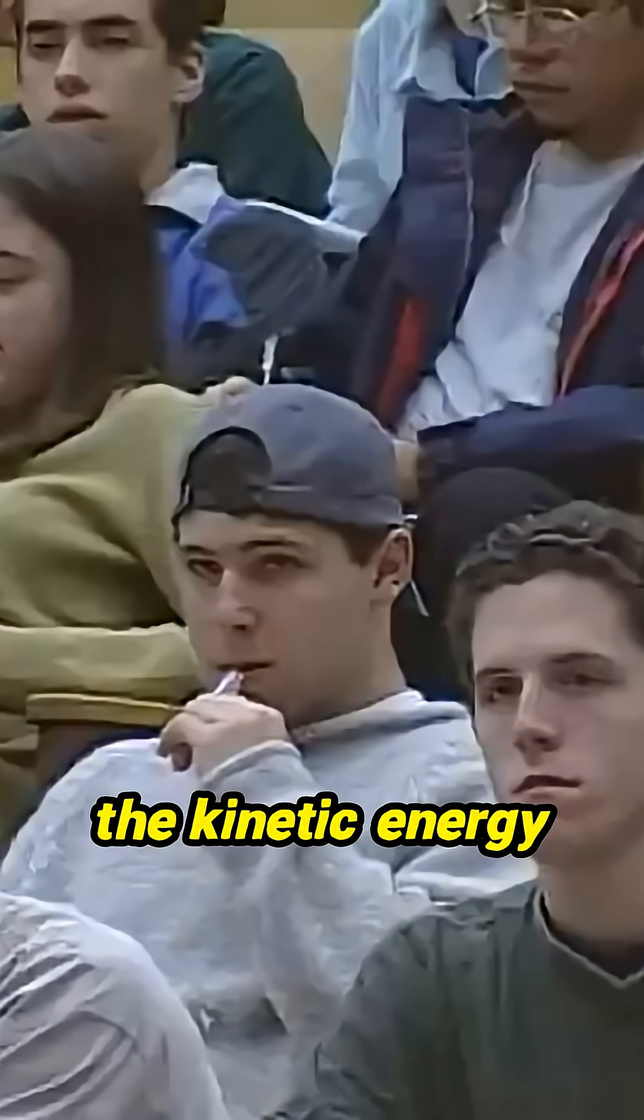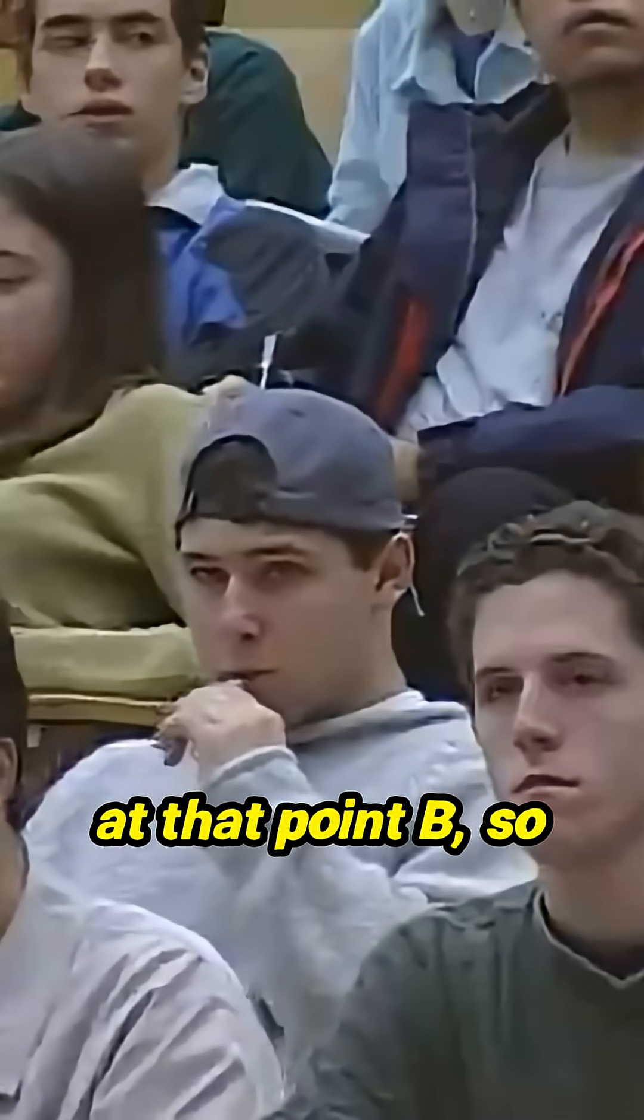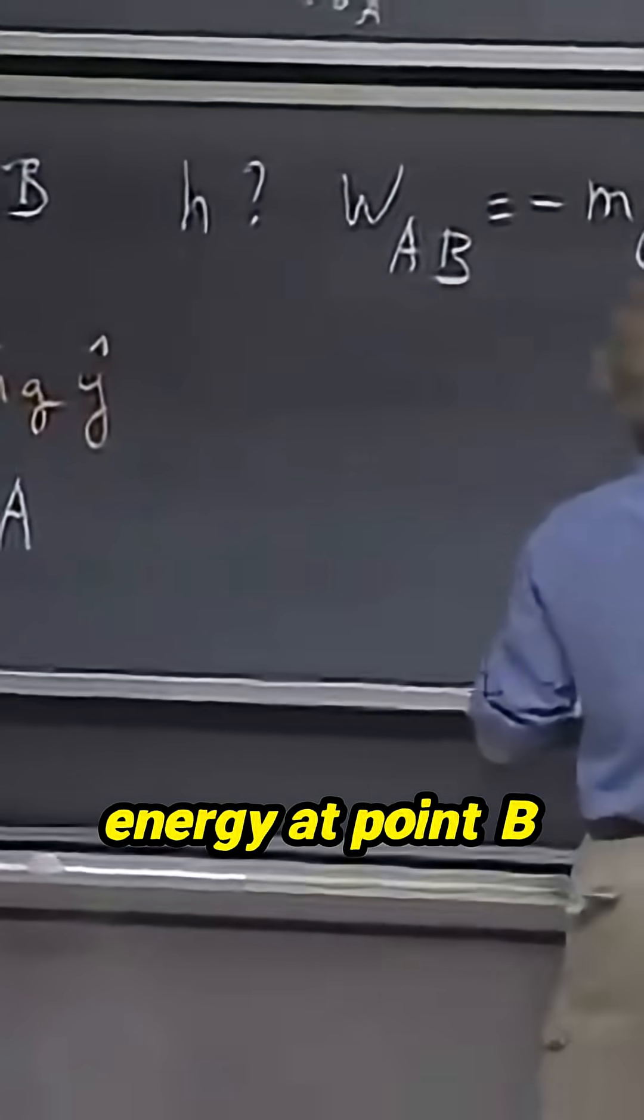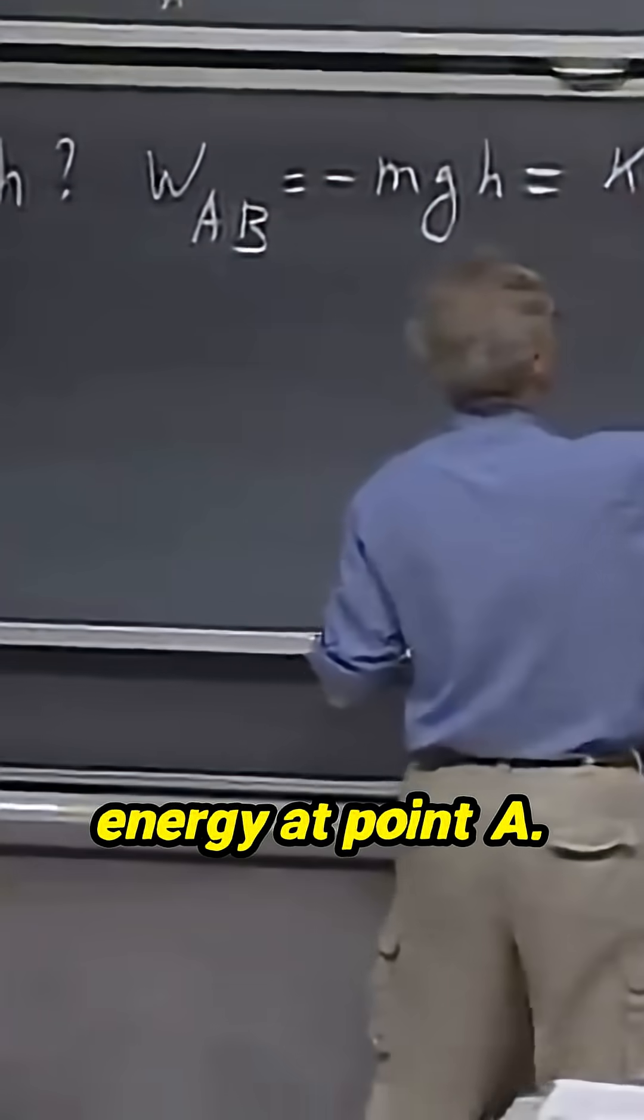So the work that gravity is doing in going from A to B equals minus mgh. That must be the kinetic energy at that point B, so that is kinetic energy at point B minus the kinetic energy at point A.